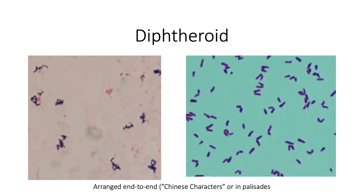Then you have your diphtheroids. These are irregular arrangements of bacteria. Sometimes they are described as a Chinese character arrangement wherein the bacteria are arranged end-to-end. And they can also form palisades. In the left figure, you can clearly see an example of your Chinese character arrangement, while on the right side, you can see a combination of both your palisades and your end-to-end arrangement.